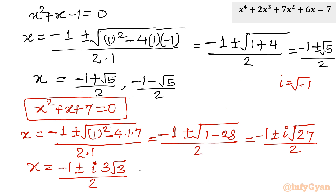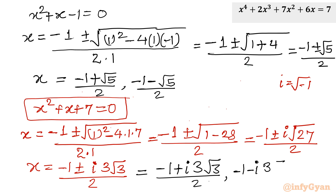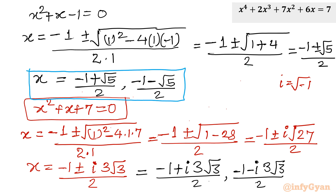So we have two complex solutions: x equals minus 1 plus i times 3√3 over 2, and x equals minus 1 minus i times 3√3 over 2. We now have all 4 solutions in total — the first two are real solutions and the second set of two are complex in nature. I hope you like this video. Thank you so much for watching. Do not forget to like, share and subscribe. Bye-bye till next video.